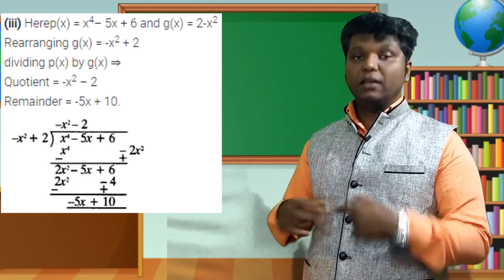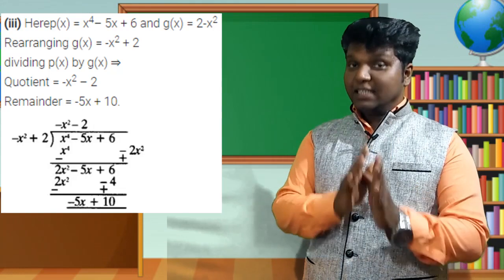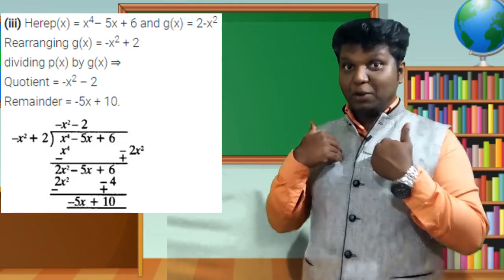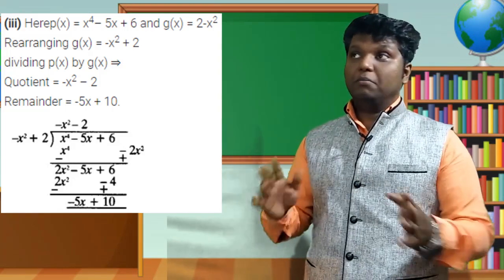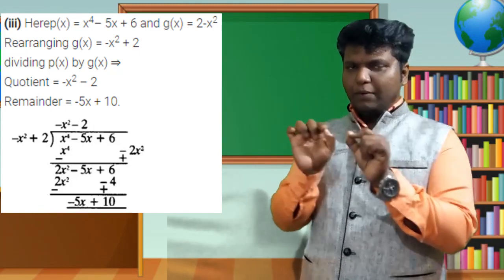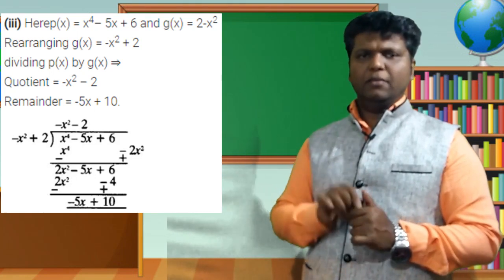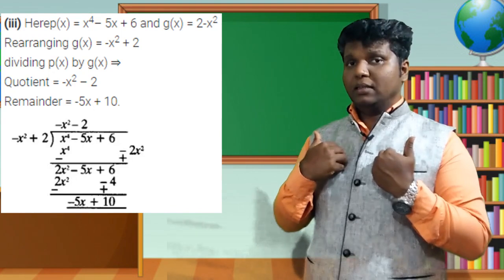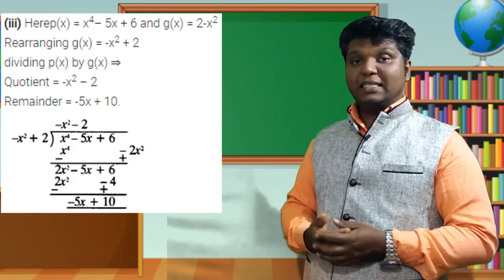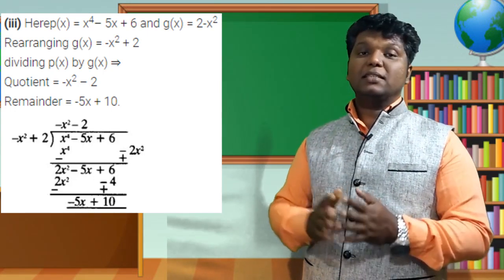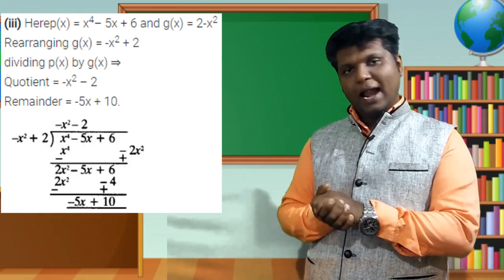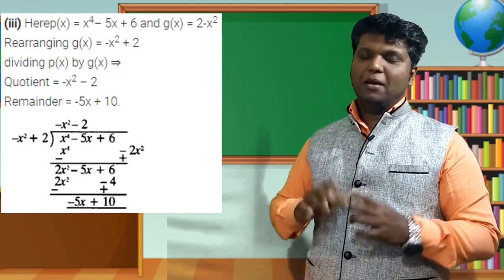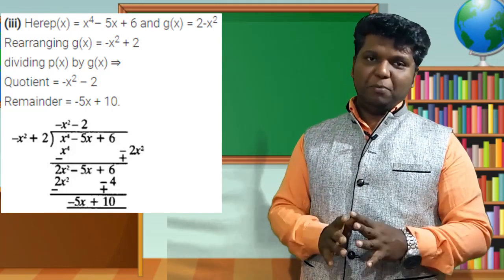Change the sign of −4 to +4 in your mind — don't write it on the paper, just keep it in mind. Adding +6 and +4 gives +10. So the remainder r(x) = −5x + 10 and the quotient q(x) = −x² − 2. This is how to divide a given polynomial by another polynomial.